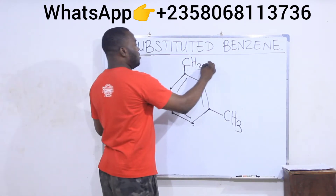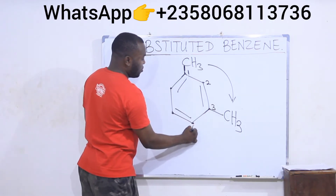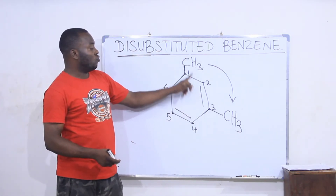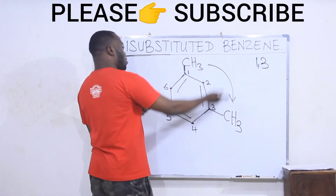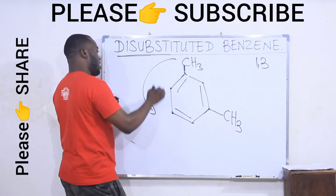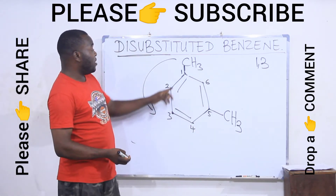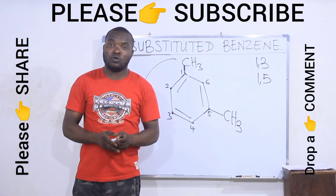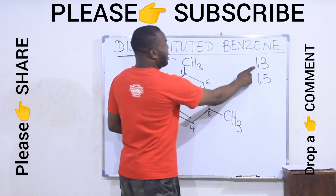We will number in this direction. Starting here, position one, two, three, four, five, and six. If I number in the clockwise direction starting from here, I will have my methyl groups at positions one and three — which is 1,3. If I number in the counterclockwise direction, moving backwards, I will have them at one, two, three, four, five, six, and the attachments will be at one and five — which is 1,5. The rule of naming says to number from the side that gives substituents the lower number. So 1,3 is lower than 1,5.